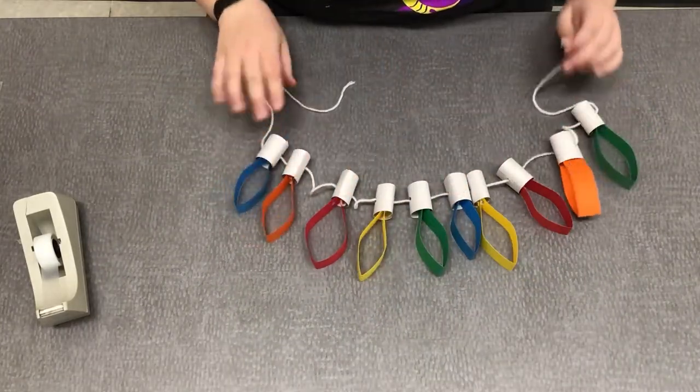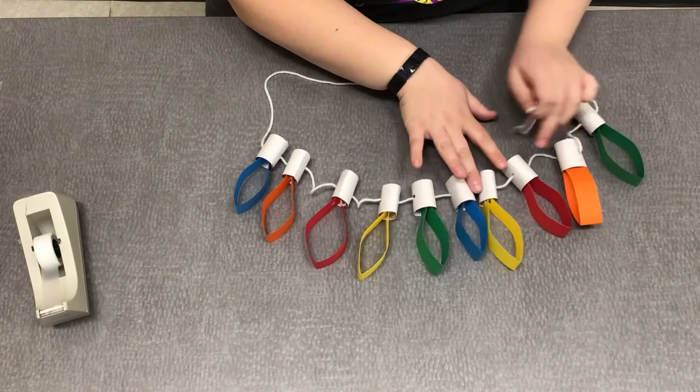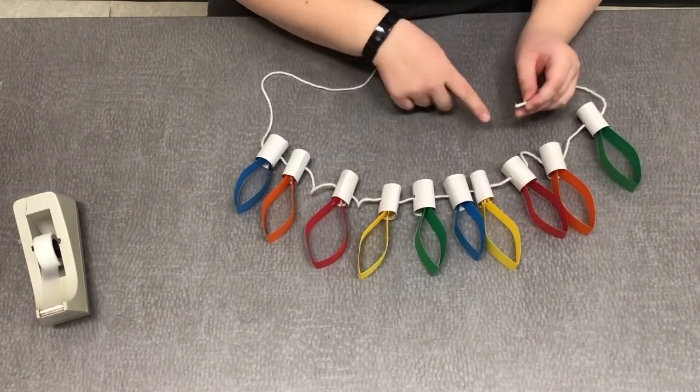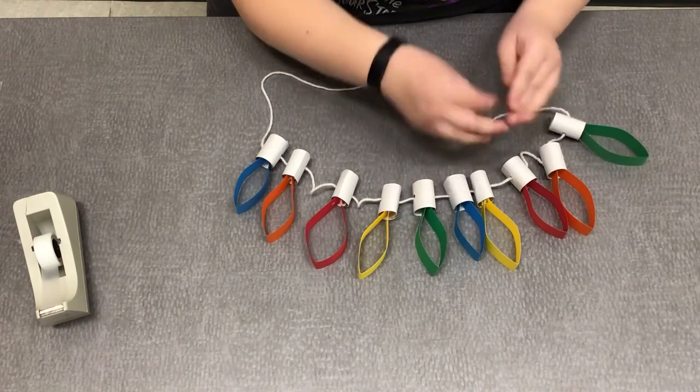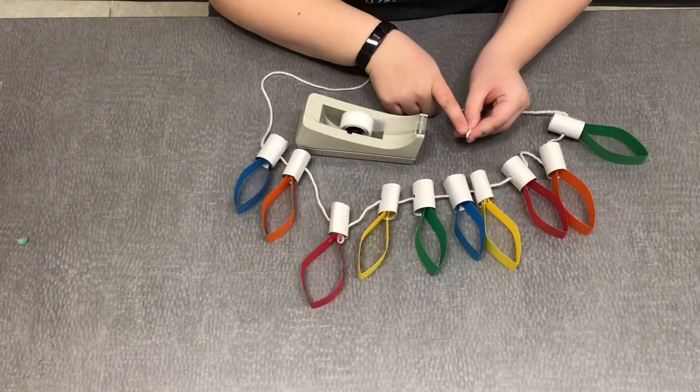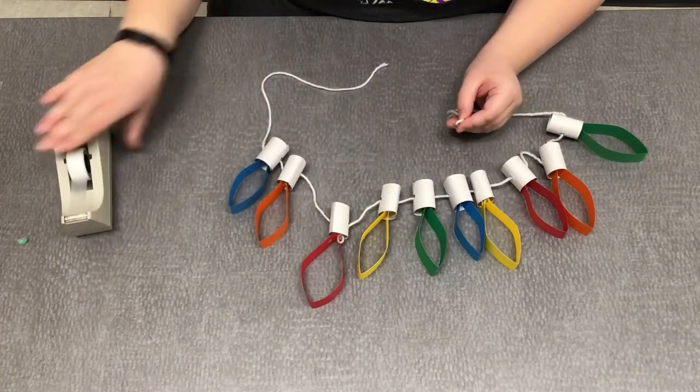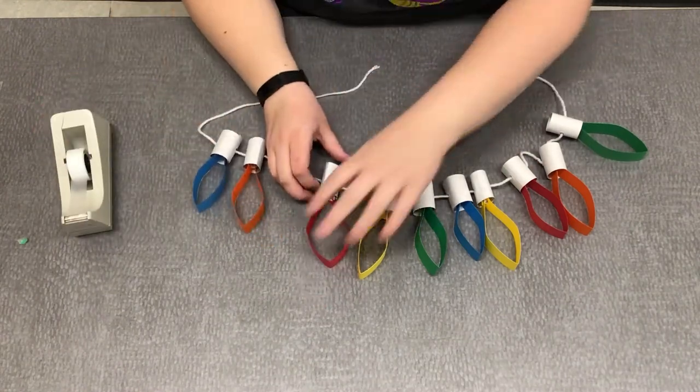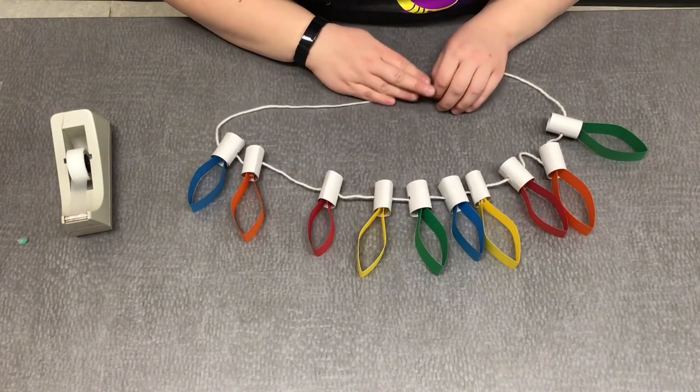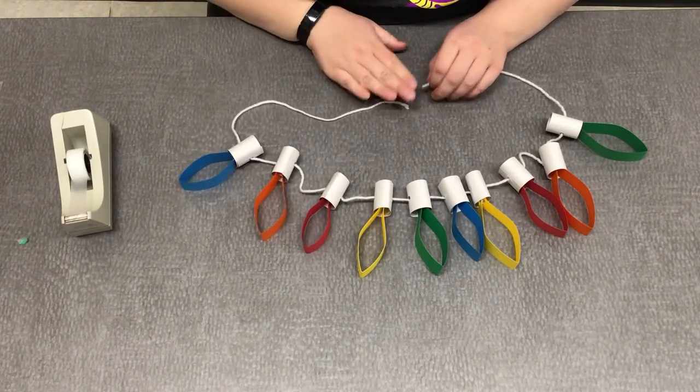Alright. So here's our finished product. We got our holiday lights for our tree. Now during stringing this, my yarn came a little bit unfrayed. And a hint and trick for that is just to put a little tape on the end of your yarn and it'll help you string through better. But I hope you all have so much fun with this Christmas craft and we'll see you soon at the library. Have a great day. Bye.